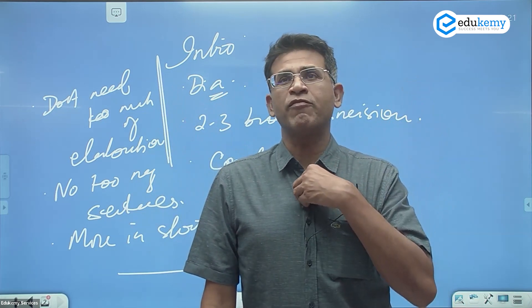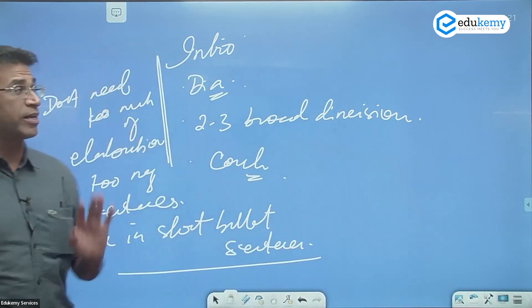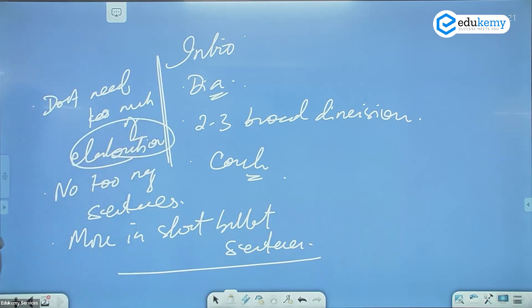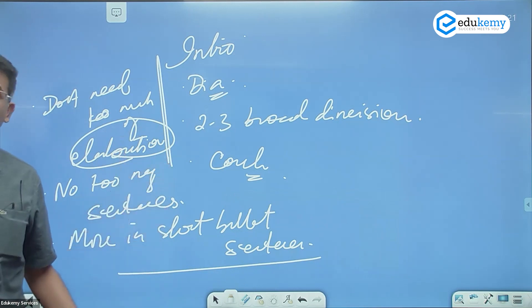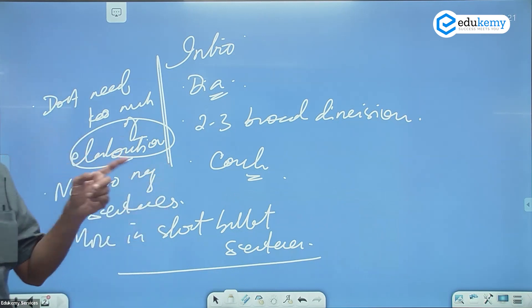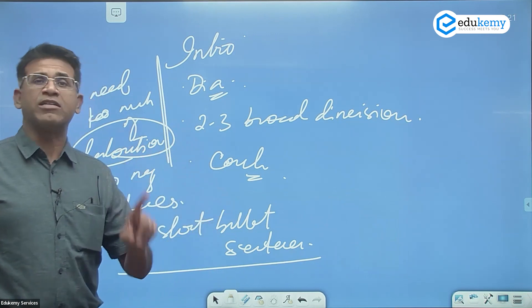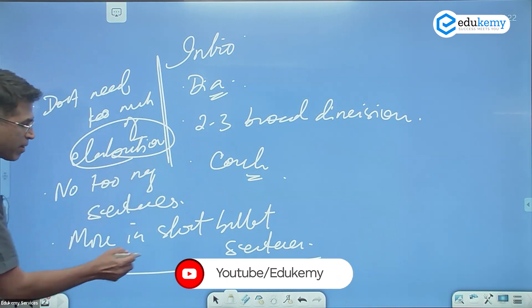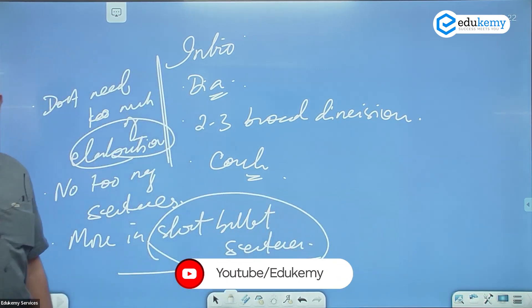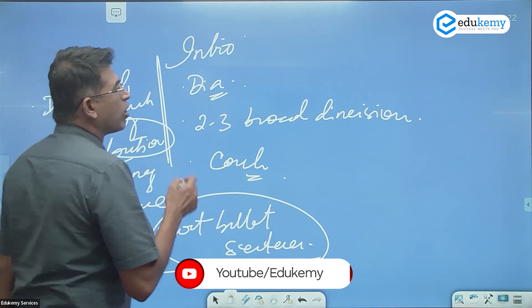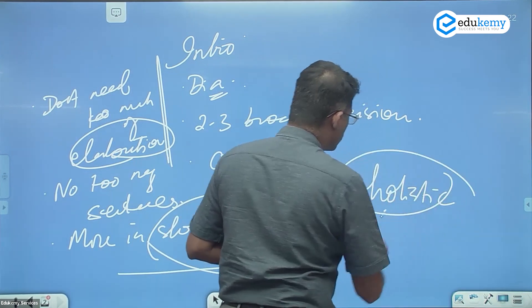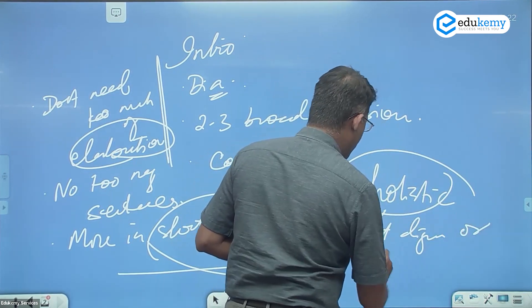That's my suggestion for geography quality. Do not write too much elaboration. Many of you are geography optional students and might write too much to show your geography knowledge — don't do that, it will impact your other answers. Short bullet statements is your approach, and wherever possible give a holistic picture through short diagrams.